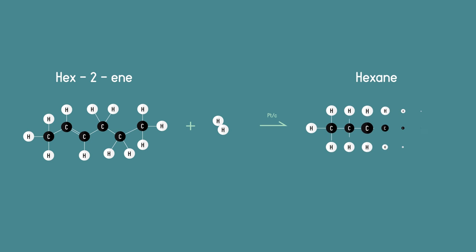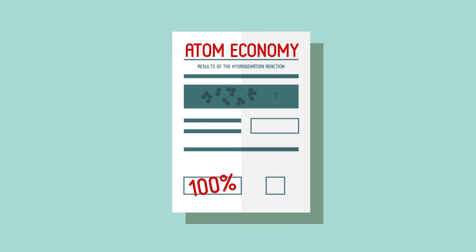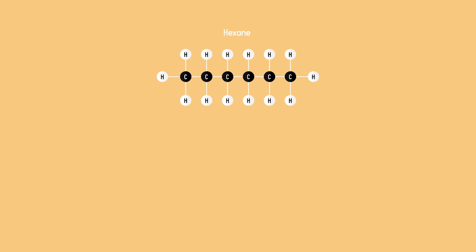The answer is hexane. This hydrogenation reaction has 100% atom economy. The final product, hexane, has all the atoms from the reactants, hex-2-ene and hydrogen. No atoms are wasted as unwanted by-products.